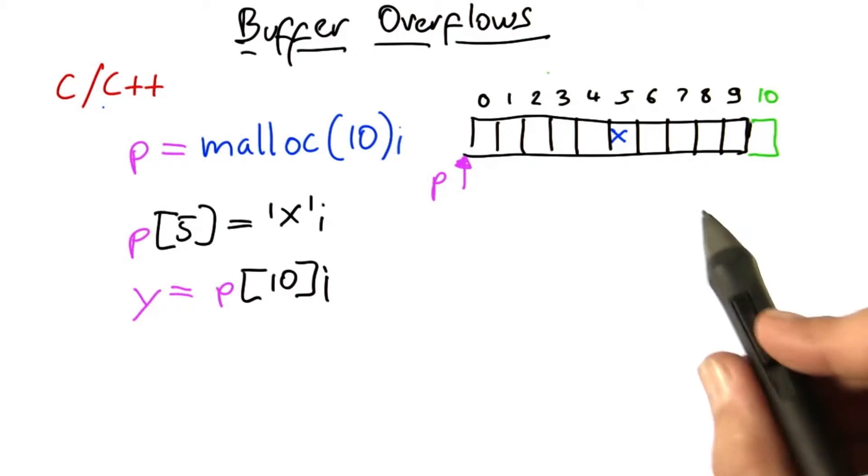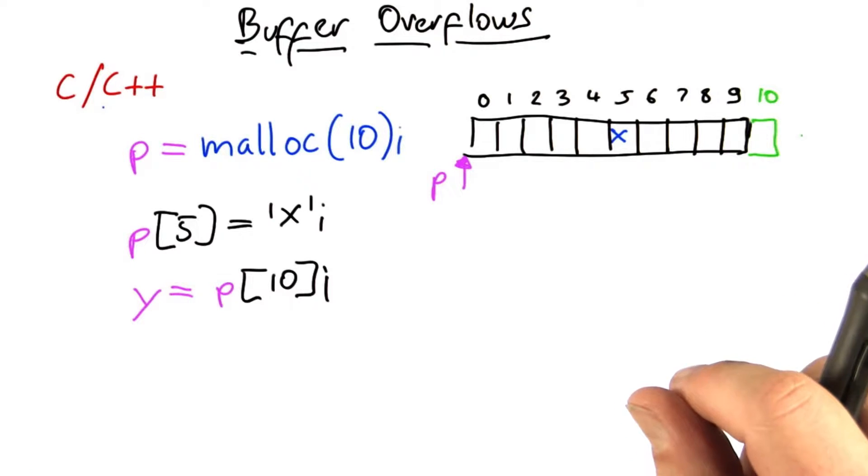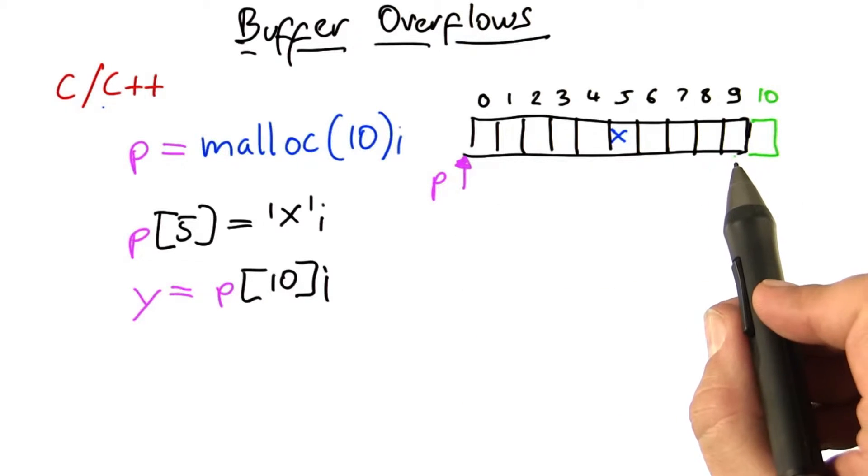You may have heard of buffer overflows which exploit precisely this flaw in C and C++ where people not only read but write beyond the elements of an array in order to supplant malicious code in select locations of the memory.